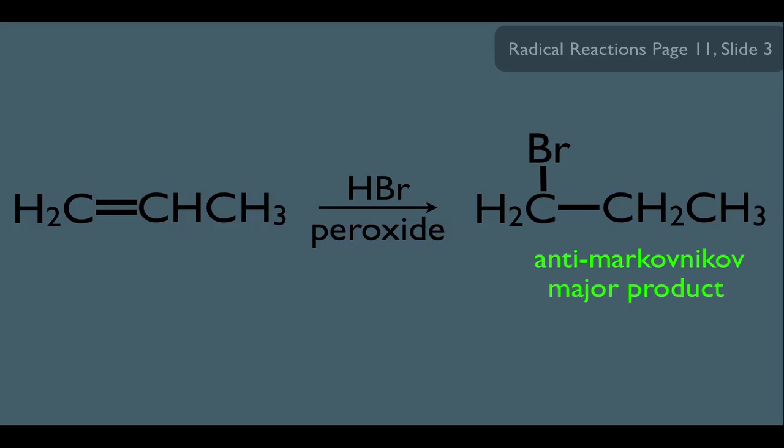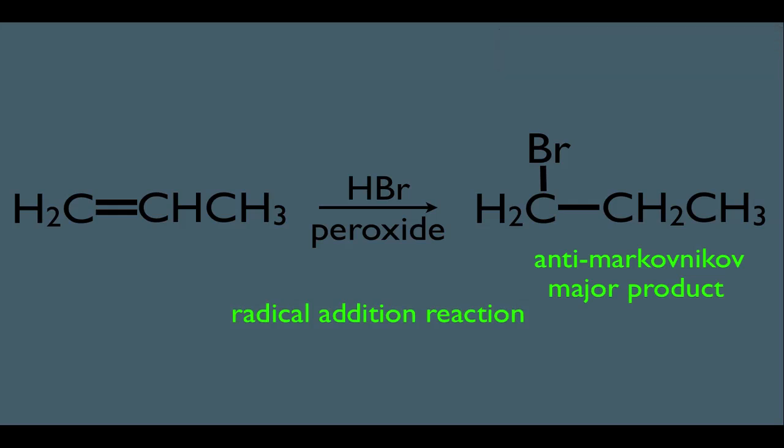On an orgo exam, we're going to pick the anti-Markovnikov product as our major product for this reaction. The termination steps are for us to understand how this reaction ends. Sometimes a professor might ask what the other possible products are — if we needed to determine that, we would look at the possible termination steps. A term that describes this reaction is a radical addition reaction: we're adding H and Br to the alkene through a radical mechanism.